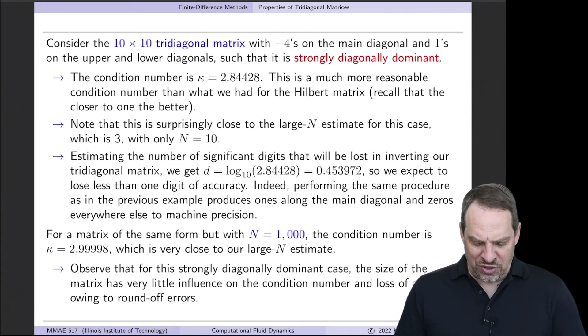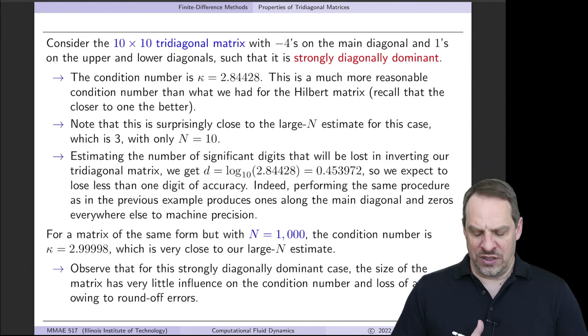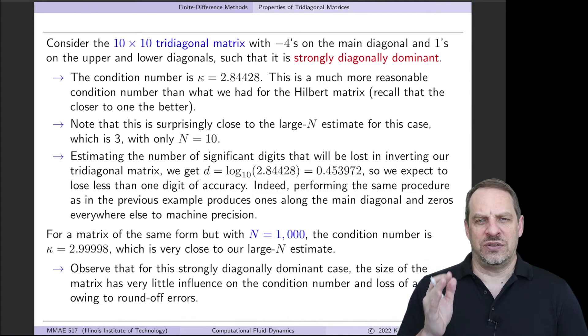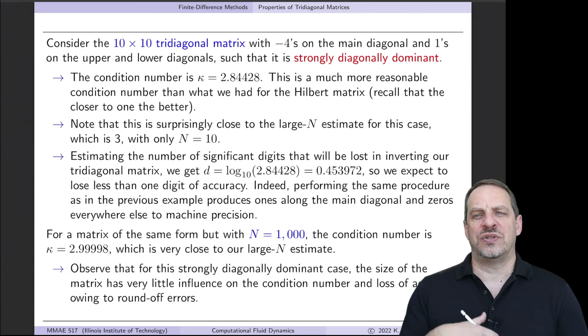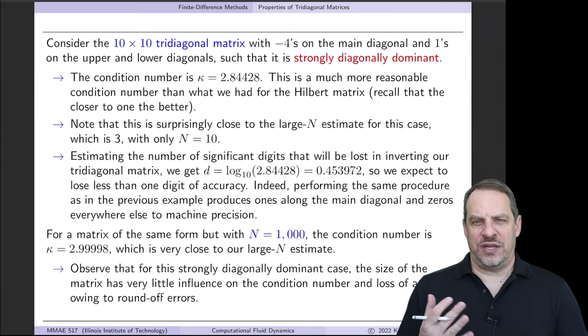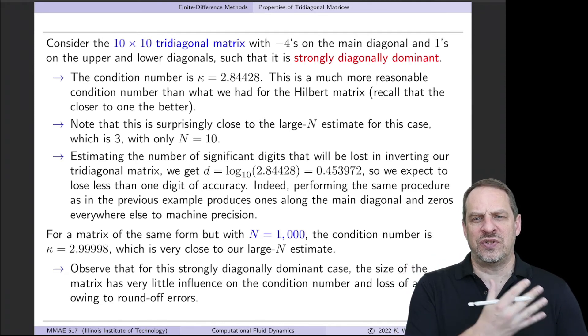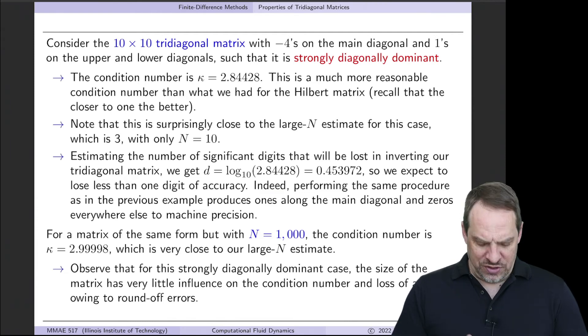Now remember that if we take log base 10 of our condition number, we get the number of digits that we would expect to lose in doing matrix operations, such as the inverse on our matrix. So that's only about 0.5. So we don't expect to lose any more than one of our 16 digits of accuracy when doing operations. So this is an example of a well-conditioned matrix. And indeed, that's the case. So again, if we take the original matrix times its inverse, we should get the identity matrix. And we do within one digit of accuracy.